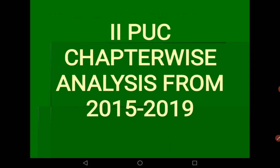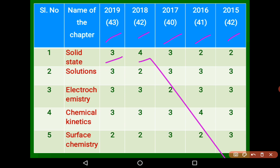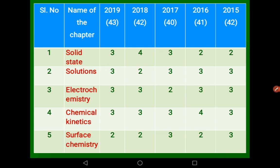Let's start with the Second PUC chapter-wise analysis. I have listed the chapter names with marks asked each year. In 2019, 43 questions were asked from Second PUC; 42 in 2018. Solid state is a very important chapter — 3 marks in 2019, 4 in 2018, 3 in 2017, 2 in 2016, and 2 in 2015. The Solutions chapter had 3 marks in 2019 and 2 marks in 2018.